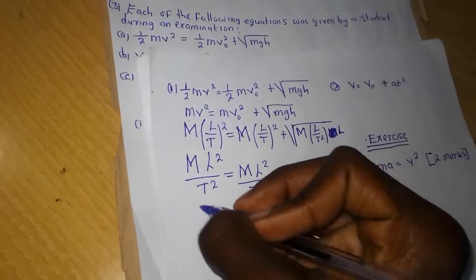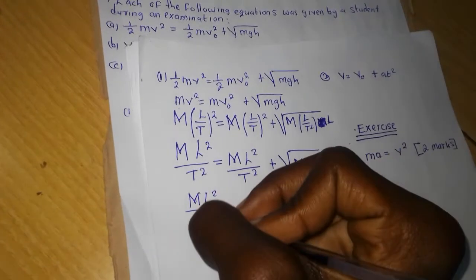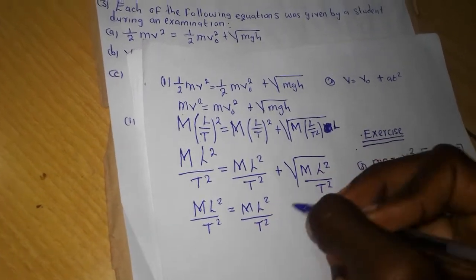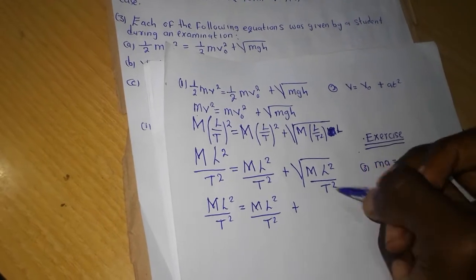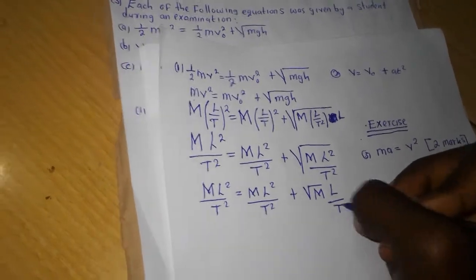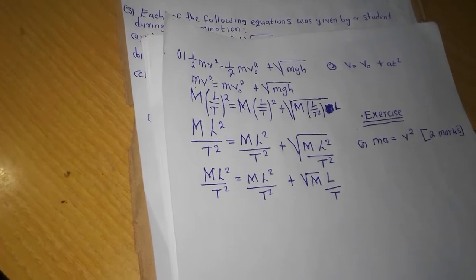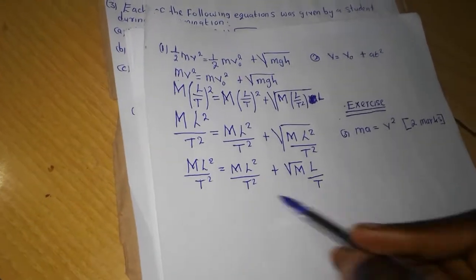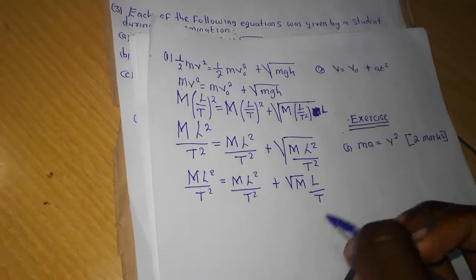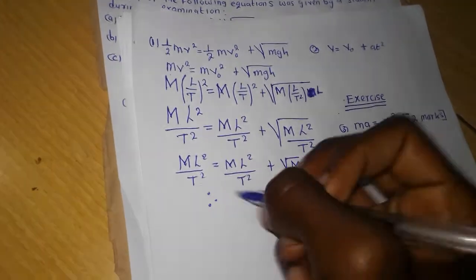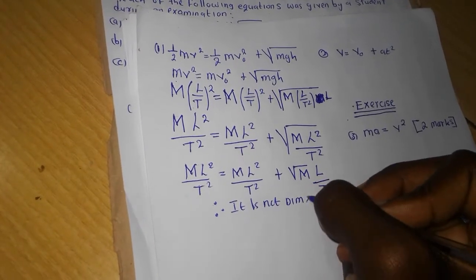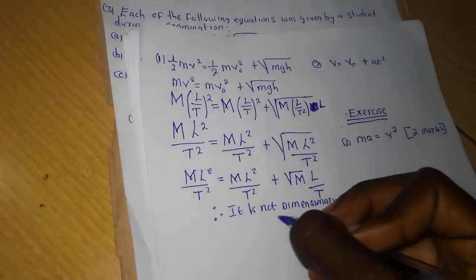Remember that in mathematics, we can square root this so that we remain with the square root of M, then L outside, then T outside. If you check here, you discover that what we have on this side and what we have on this side are two different things. Therefore, this formula is not dimensionally correct.